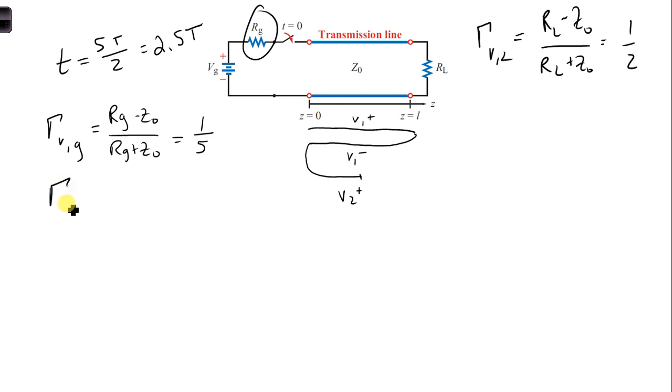So then from this, we can get the current reflection coefficient, which is just minus the voltage reflection coefficient, so it's minus 1 fifth. And on this side, we'll get minus 1 half for the load.